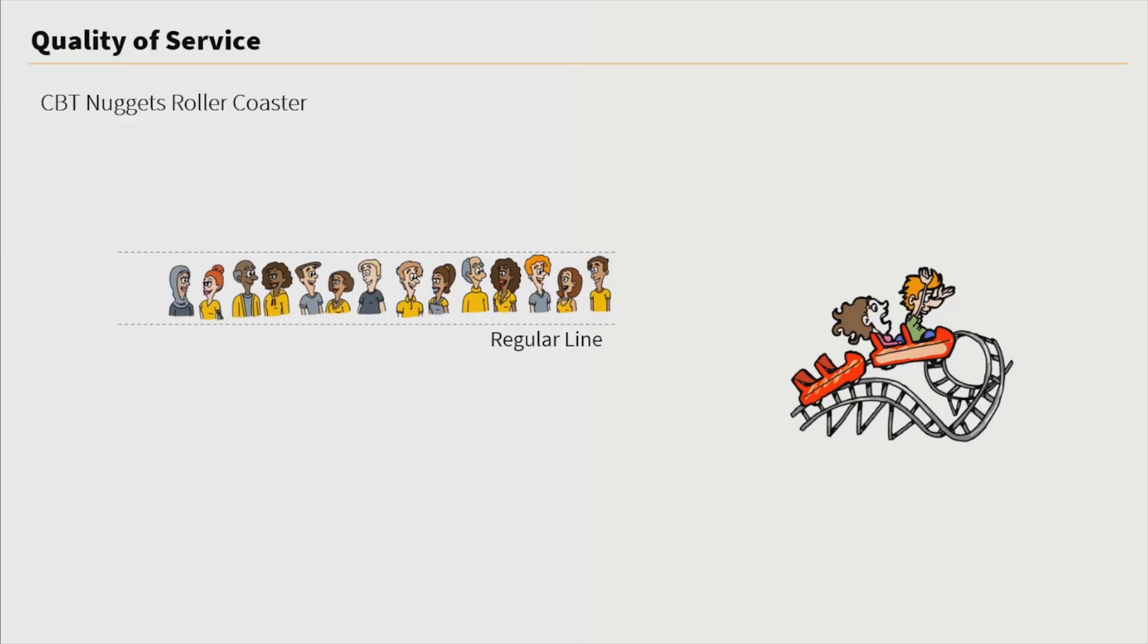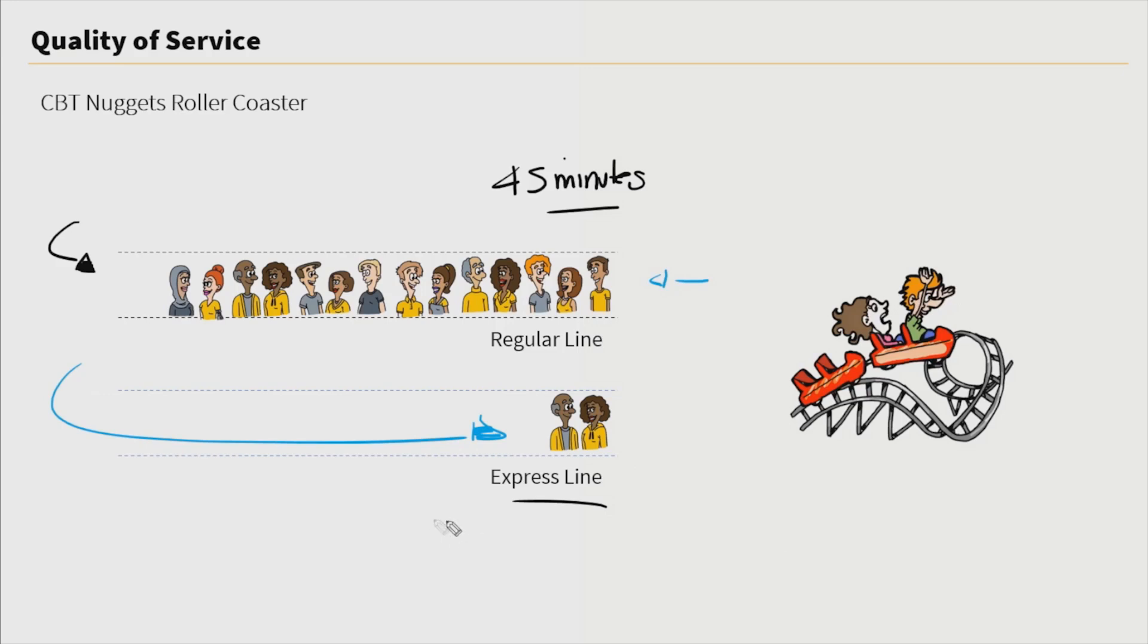Let's say this was Saturday at 1 p.m., so now you have more people in this line. Maybe it's wrapping around the building, so now we have a wait time of about 45 minutes. Now, many theme parks will have an express line. This express line allows you to skip this line and walk directly to the front. So maybe upon the price of admission, you pay for this extra privilege. Here, your wait time is two minutes or less.